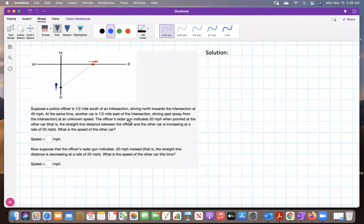The officer's radar gun indicates 20 miles per hour when pointed at the other car. That is, the straight line distance between the officer and the other car is increasing at a rate of 20 miles per hour. What is the speed of the other car?